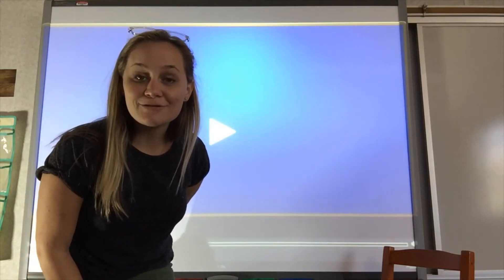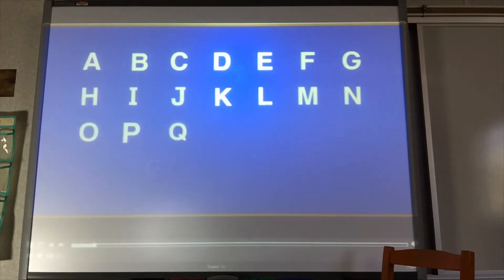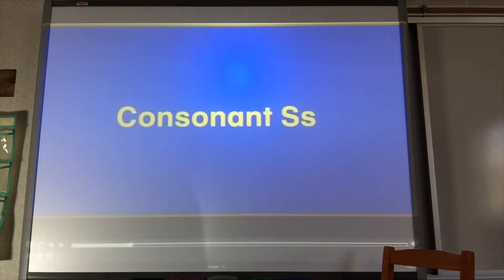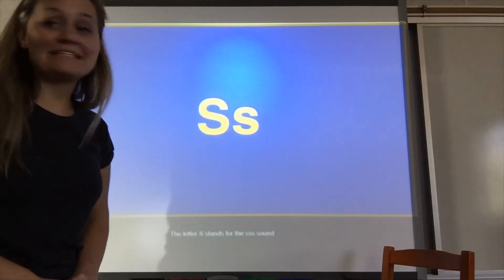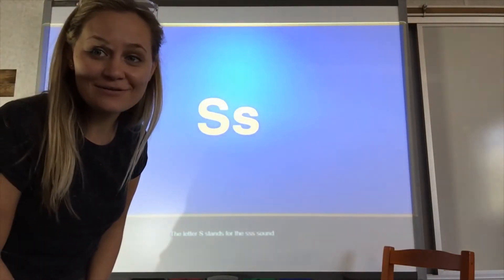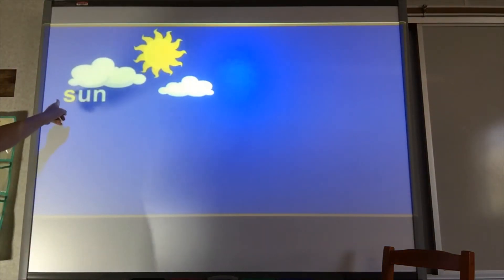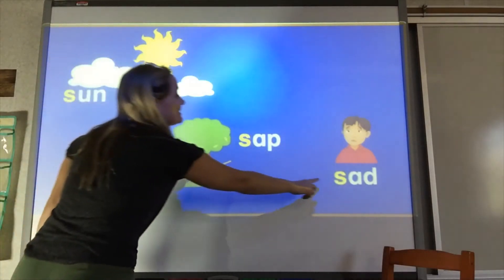All right guys, let's learn some more about the letter S. The letter S is a consonant. The letter S says ssss. Can you make that sound? Ssss. You hear it at the beginning of sun. And two other words that begin with S are sap and sad.